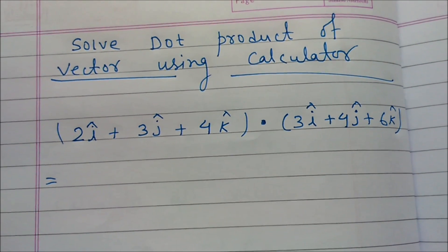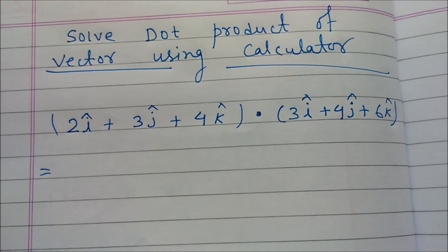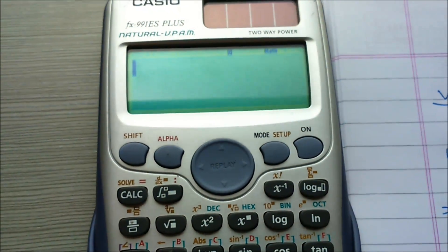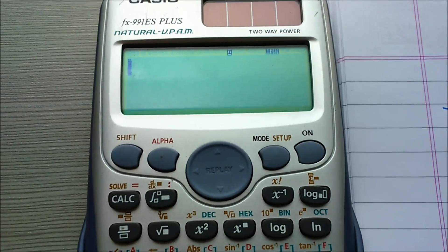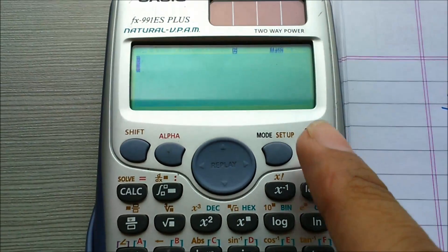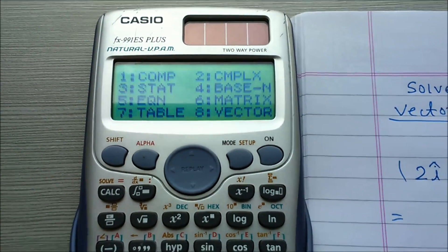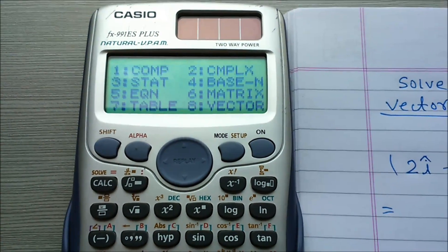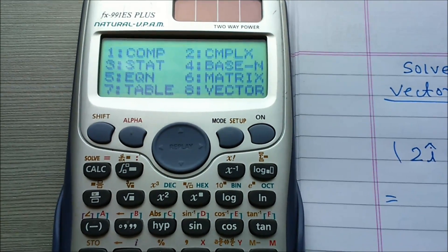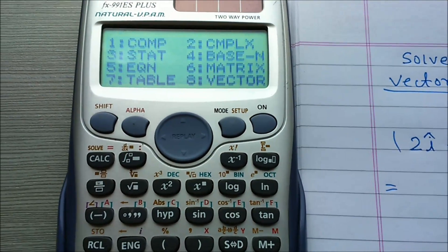To calculate the dot product using the calculator, we first have to select the vector mode. Click on the mode button. Vector is number 8 — 6 is matrix, 7 is table, and 8 is vector. So press 8.